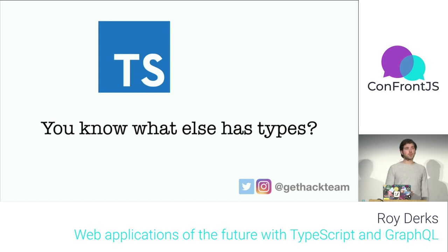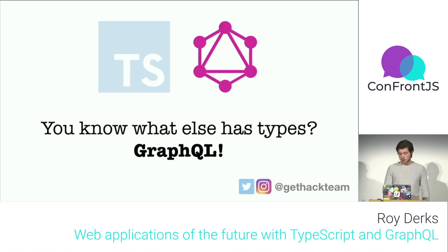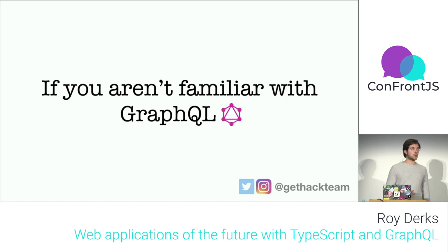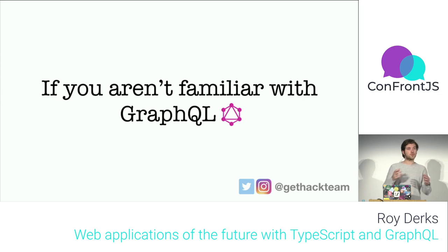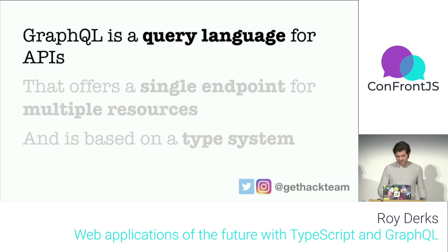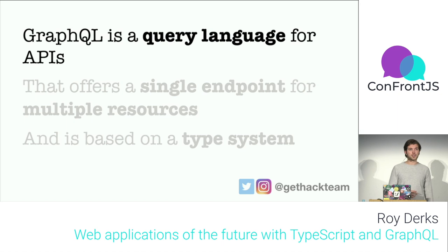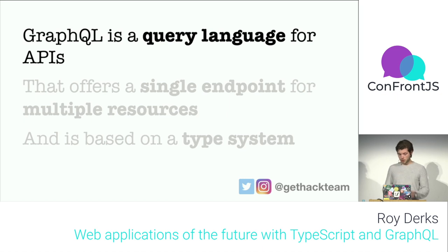TypeScript has types, and GraphQL has types as well, which makes it strong and easy to use. GraphQL is what they call a query language for APIs. It helps you make APIs more readable, more understandable, and easier to use in your products.